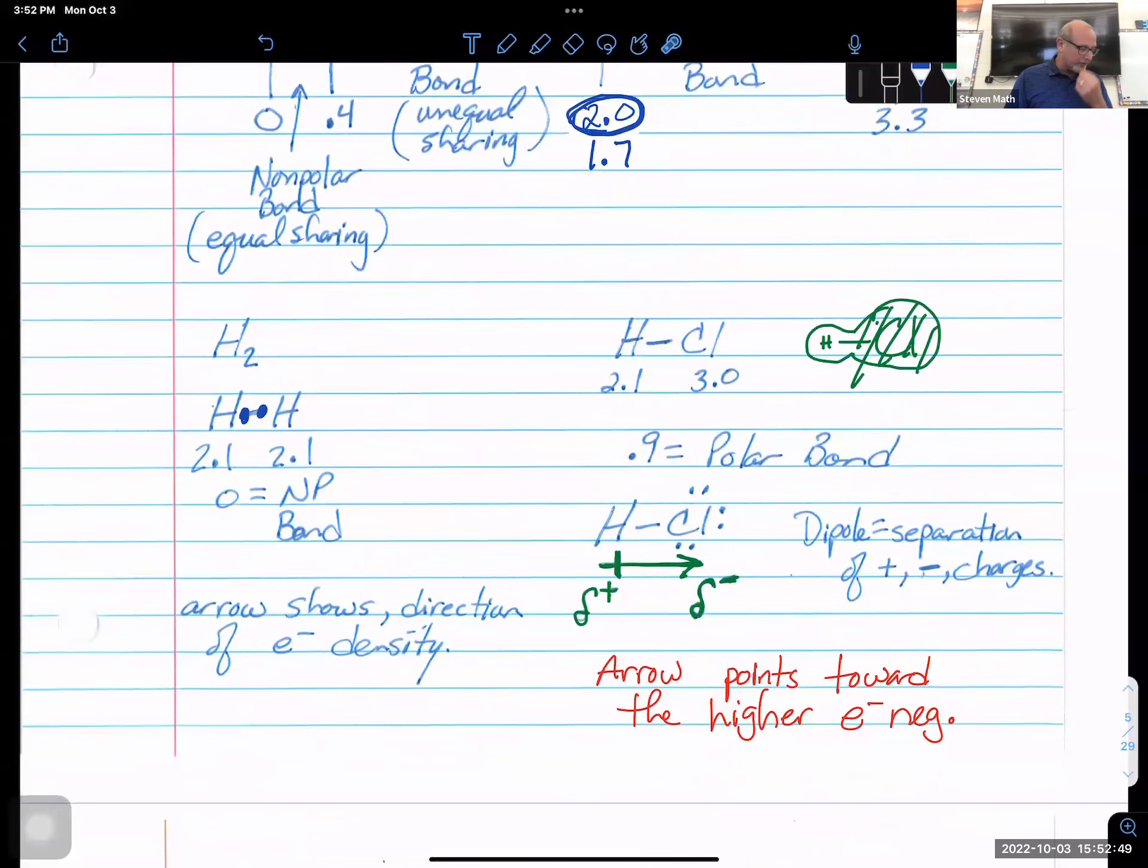So now if we look and it says, hey, what kind of bonds do you have here? Well, in H2, I've got 2.1 and 2.1. The electronegativity difference is zero. Therefore, we have a nonpolar bond. We're going to be looking for things that are fairly close together on the periodic table. All of our diatomics are going to be nonpolar, evenly shared, meaning the electron distribution is as equal on the right side of this molecule as it is on the left side of that molecule.